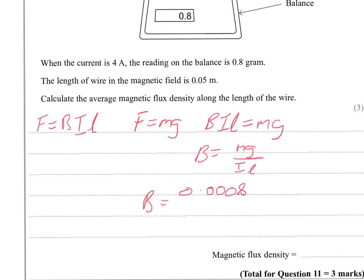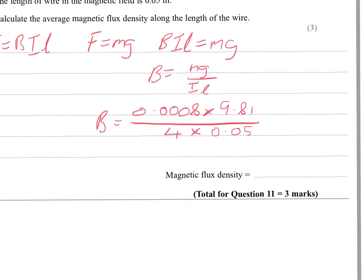Just remember that it's 0.8 grams, not 8 grams, so you need another zero here. And just feed that into the calculator. And that gives us 0.039 tesla.